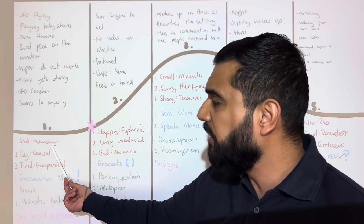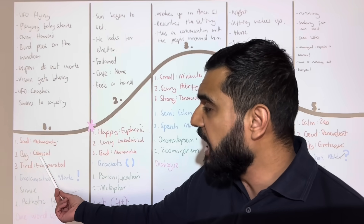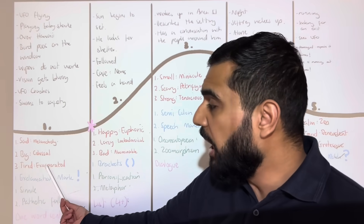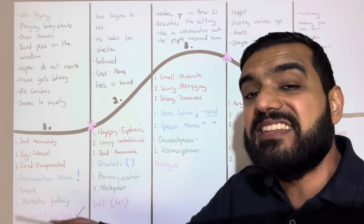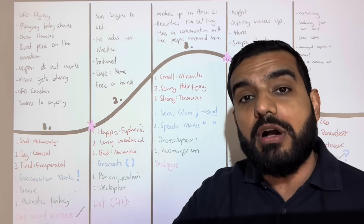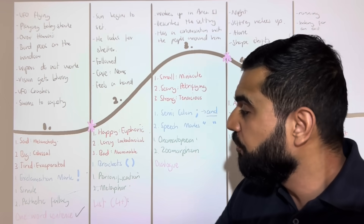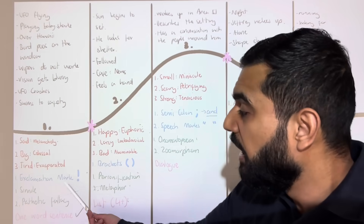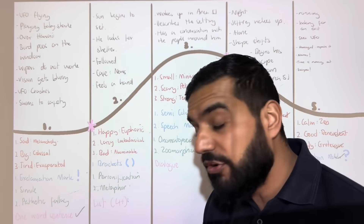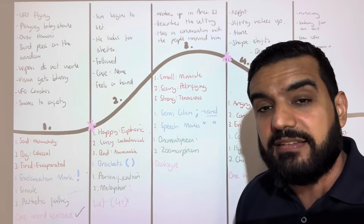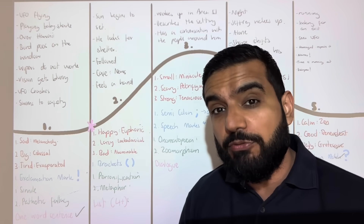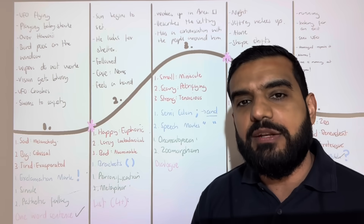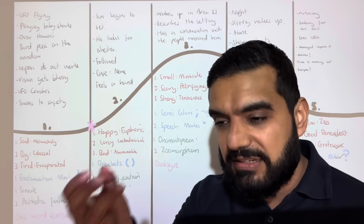In paragraph one: replace 'sad' with 'melancholy', 'big' with 'colossal', 'tired' with 'exasperated' — that earns your vocabulary mark. For punctuation in paragraph one: use an exclamation mark, a pathetic fallacy, and a one-word sentence. The answer that got 40 out of 40 used exactly this — I gave her the ingredients and said use them like a robot.